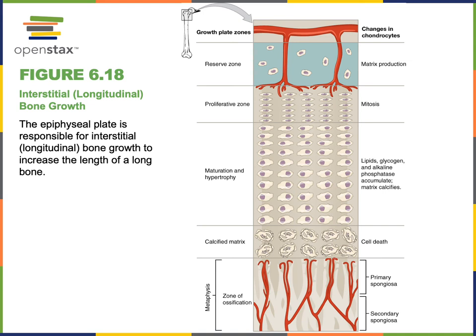The zone of ossification is the region of the epiphyseal plate closest to the diaphysis. New osseous tissue is constantly being generated at the zone of ossification, replacing hyaline cartilage that is constantly being generated at the proliferative zone.